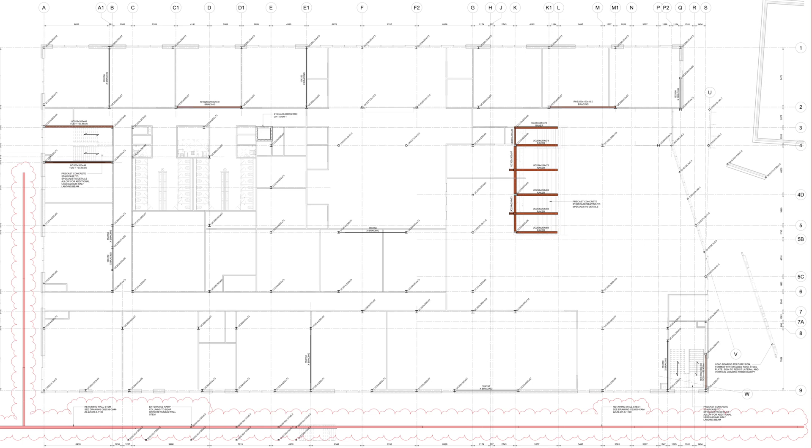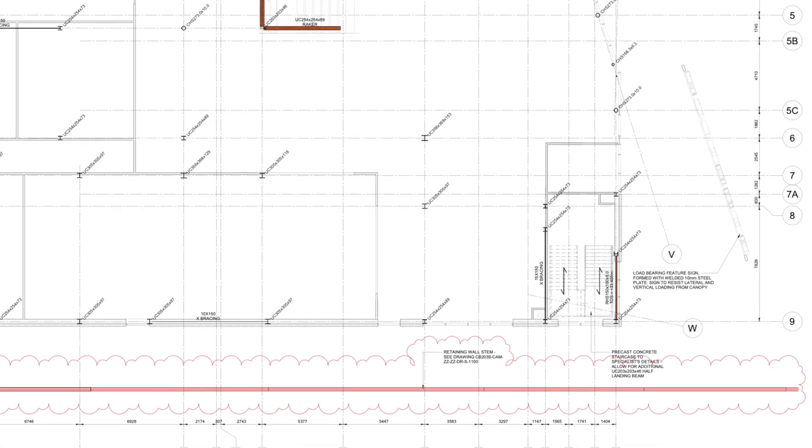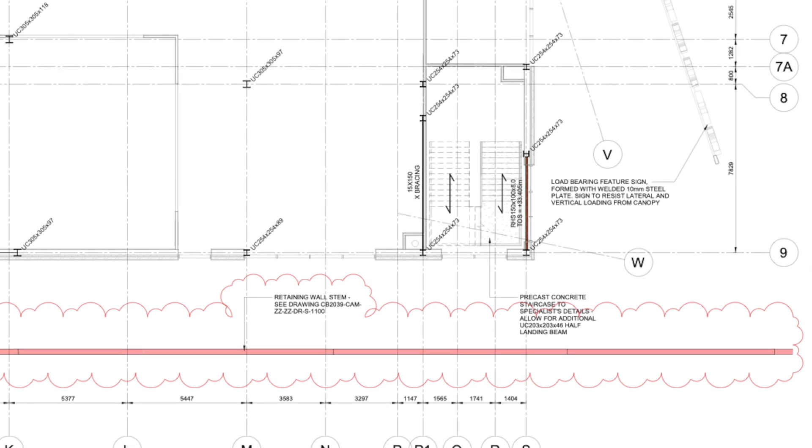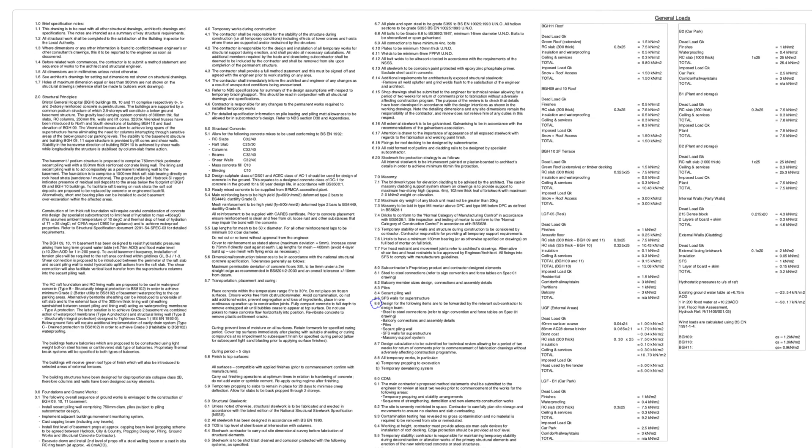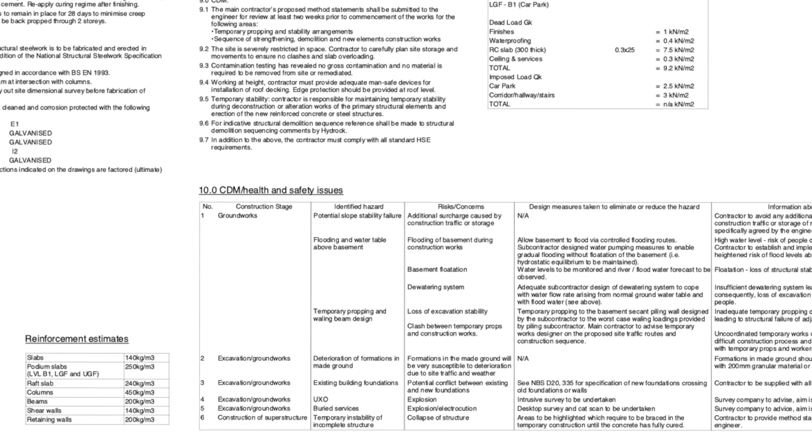The key point of stage 3 is submitting your information for the contractor to tender. It's really important that you get the right information in your drawings or reports. It's okay to make changes later on, but you need to completely highlight all the assumptions you've made and alert the contractor or the person tendering that they need to make allowances for some unknowns. For example, reinforcement rates — at RIBA stage 3 you won't have done the full concrete frame design, so you need to put down indicative rates for beams, slabs, columns, and walls so the tenderer can price it.